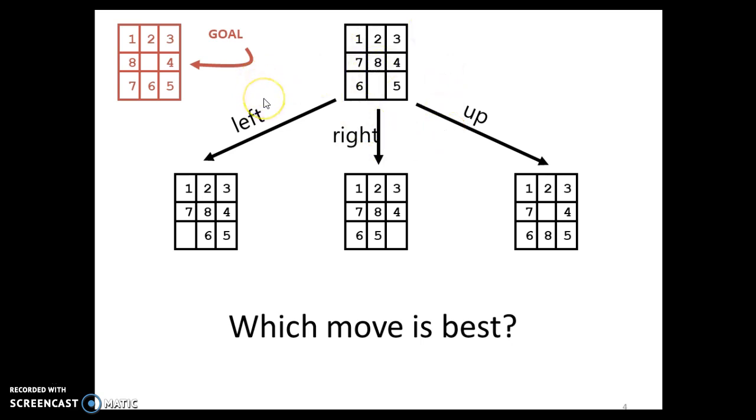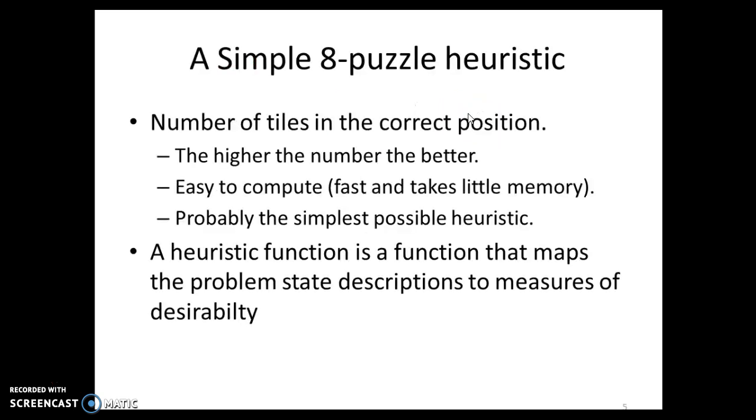To find which of these is a possible legal move or which of these is the most optimum among these three, we can define the heuristic function as the number of tiles in the correct position. So if I tell the number of tiles in the correct position as my heuristic function, the higher the number, the better the value. Or if I have my heuristic function as number of misplaced tiles, obviously the lesser the number, the better the heuristic function is.